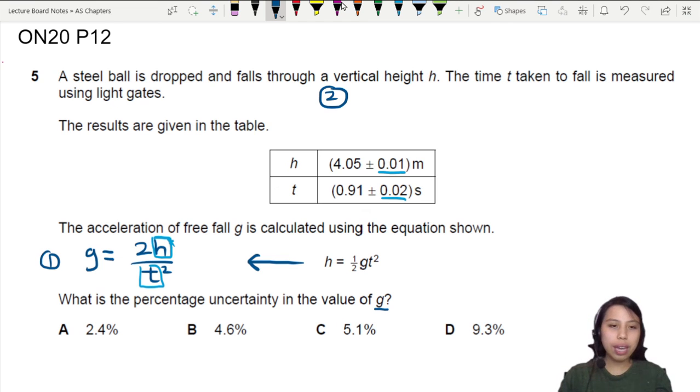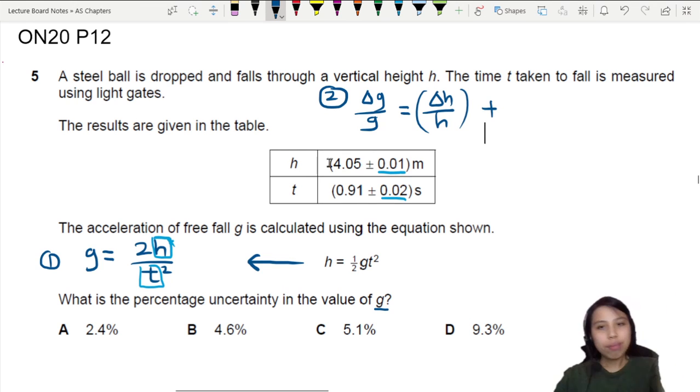For example fractional uncertainty. I want to find uncertainty in g. That's a fraction equals to the first one h. We're gonna say uncertainty in h over h plus, we have to plus because uncertainty always add. Fractional uncertainty always add. Percentage uncertainty always add.